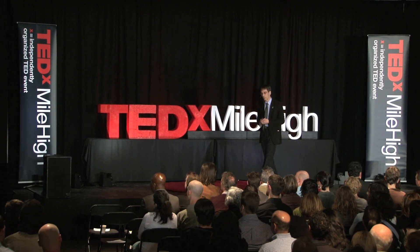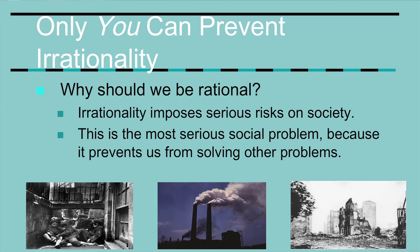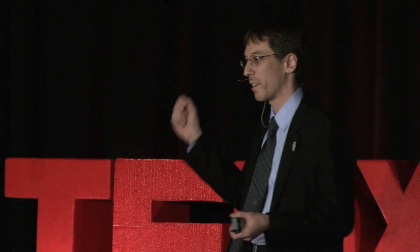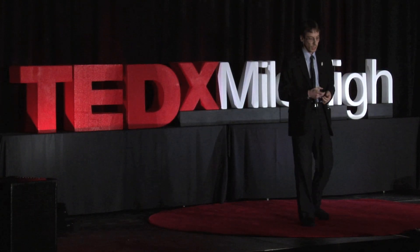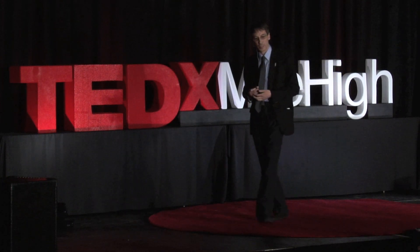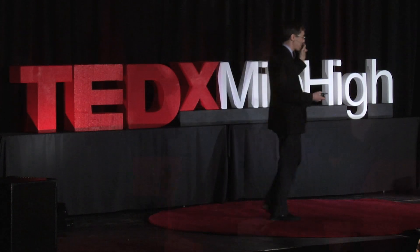I claim that political irrationality is the most serious social problem we face. The worst problem is not world poverty, pollution, destruction of the environment, or even war — it's human irrationality, because this is the problem that prevents us from solving the others. If you're going to solve a problem, you generally have to have accurate beliefs about it. A doctor who picks a cure out of a hat will probably make you worse off. That's roughly how I see our political system: if you're forming beliefs in an irrational manner, it's like picking out of a hat. So at least the first step to combat irrationality is to identify the problem — admitting you have one.